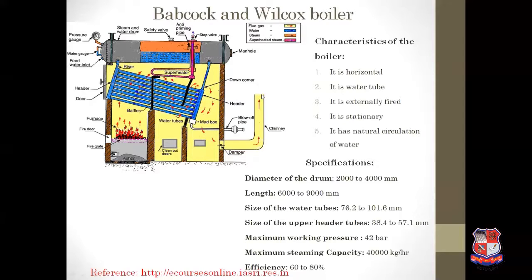Inside the Babcock-Wilcox boiler, baffles are provided so that hot gases move in a sine wave form during their movement, covering the maximum surface area of the water tubes. After finishing this sine wave movement, the hot gases leave the boiler. Important mountings include a pressure gauge to read the steam pressure inside the boiler and a water level indicator to monitor the water level.